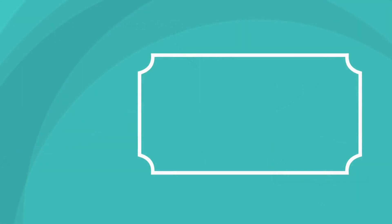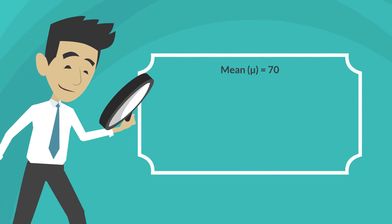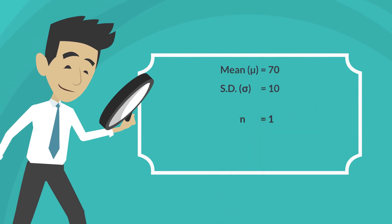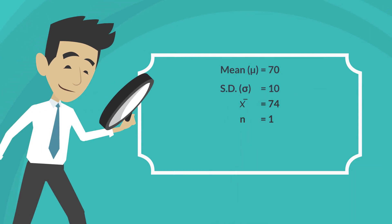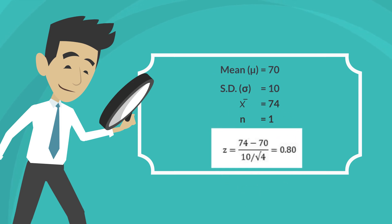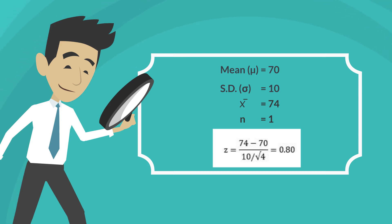Now let's say instead of one score, we randomly select 4 scores and the average of those 4 scores is 74. The z-score is calculated as follows: z equals 74 minus 70, divided by the standard error, which is the standard deviation of 10 divided by the square root of n, which is 4. This gives us a z-score of 0.8.